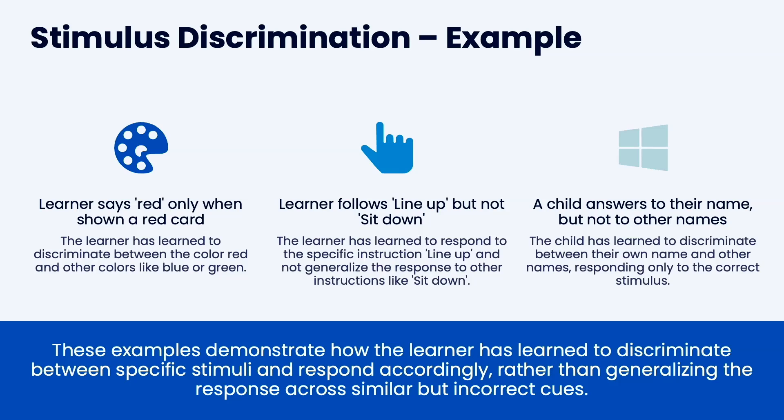If they are shown a green car, they don't say the word red. The learner follows line up, but not sit down — the learner has learned to respond to the instruction line up and not generalize a response to other instructions like sit down. The child answers to their name, but not to other names. This is all stimulus discrimination, and there are lots of situations where we need stimulus discrimination.